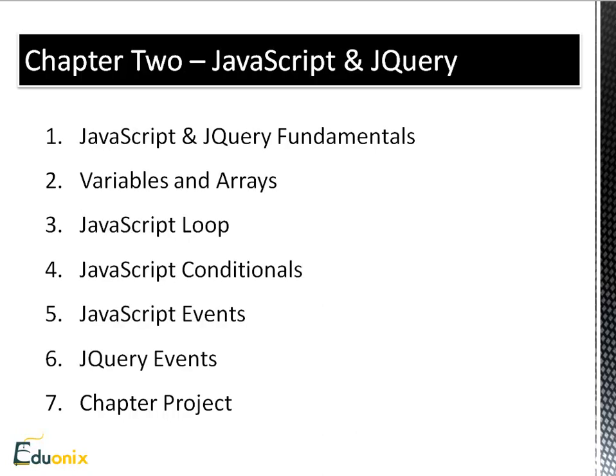Chapter 2 will be on JavaScript and the JavaScript library jQuery. We'll discuss the fundamentals — JavaScript variables and arrays, all the programming basics: loops, conditionals, if statements, and switch. We'll also be looking at JavaScript and jQuery events — browser events that we can grab onto and make certain things happen when an event is launched, such as a click or a hover. And then we'll do a project that will have to do with JavaScript and jQuery.